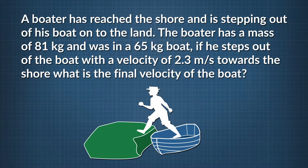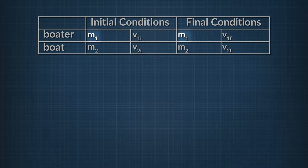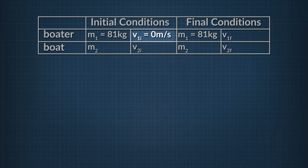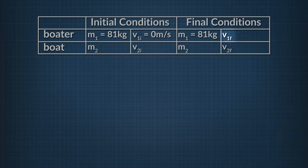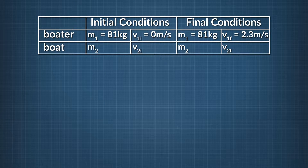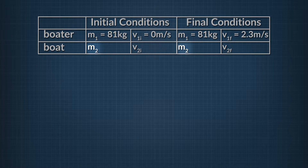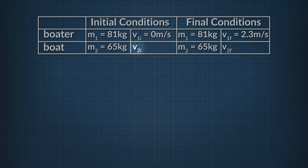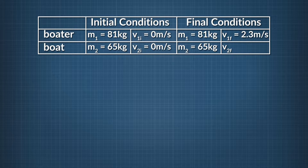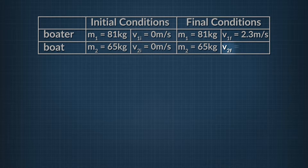The first thing we want to do is set up a data table that clearly shows the information given to us and what we're trying to solve for. M sub 1, the mass of the boater, is equal to 81 kg. V sub 1i, the initial velocity of the man, is zero because he is initially at rest in the boat. V sub 1f, the final velocity of the man, is 2.3 m/s towards the shore. The mass of the boat, M sub 2, is 65 kg. The boat's initial velocity, V sub 2i, is zero since the boat is also initially at rest. We want to solve for the boat's final velocity, V sub 2f.